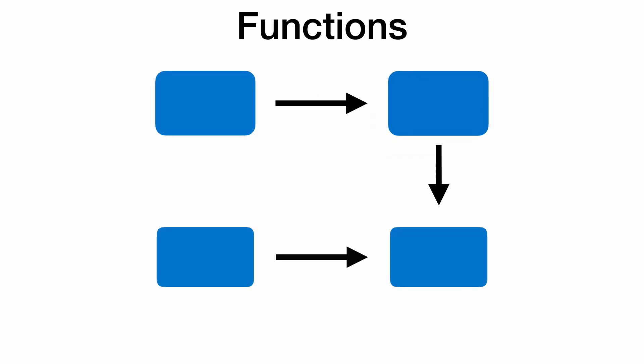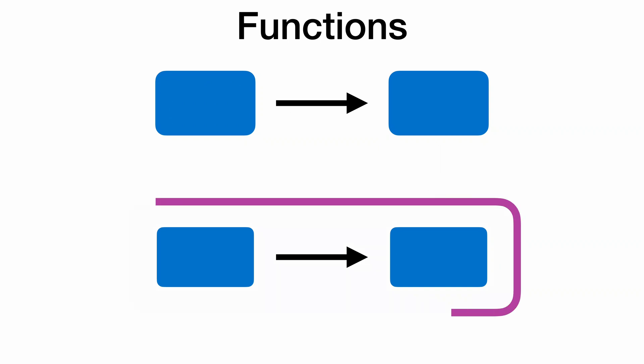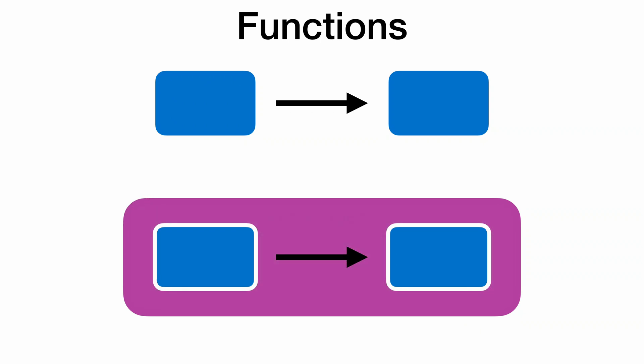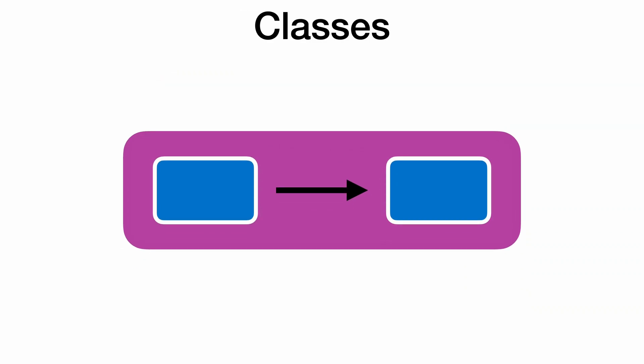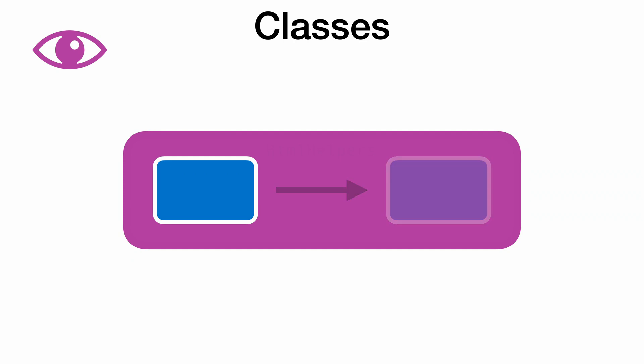Functions call other functions like building blocks linking together. But we don't just allow any function to call any other function, we organize them further. We take groups of related functions and draw yet another boundary around those. These are classes, in an object-oriented language anyway. From outside the class we can only see what we've intentionally designated as public. Some functions are private, invisible to the world outside of the class.